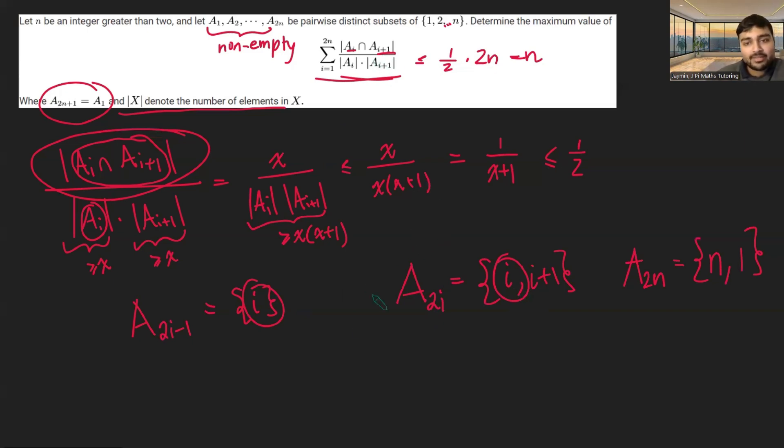and the denominator, again, one of these will be odd. One of these will be, if i is odd, that will be this set, which has size 1, and that will be size 2. Or it's the other way around. So it's going to be 1 over 1 times 2, which, of course, is a half.